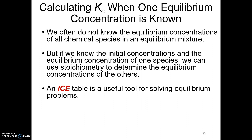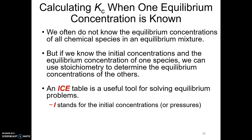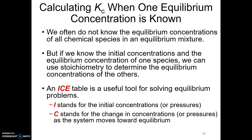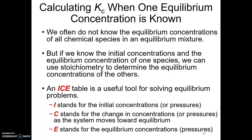Under the R comes ICE. I stands for initial concentrations — those are the initial pressures or concentrations. E is pretty straightforward: E stands for equilibrium. And C is the change between the two — the change in concentrations between initial and equilibrium. So I is initial, E is equilibrium, and C is the change between the two.